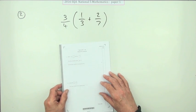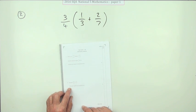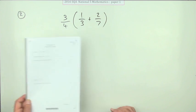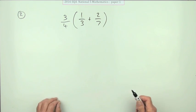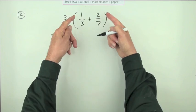Number two from paper one of the 2016 National 5 Maths. Here we go, fractions. It's only two marks for this. That seems a little bit mean considering you've got to do two things here. Well, add first because it's in the bracket.